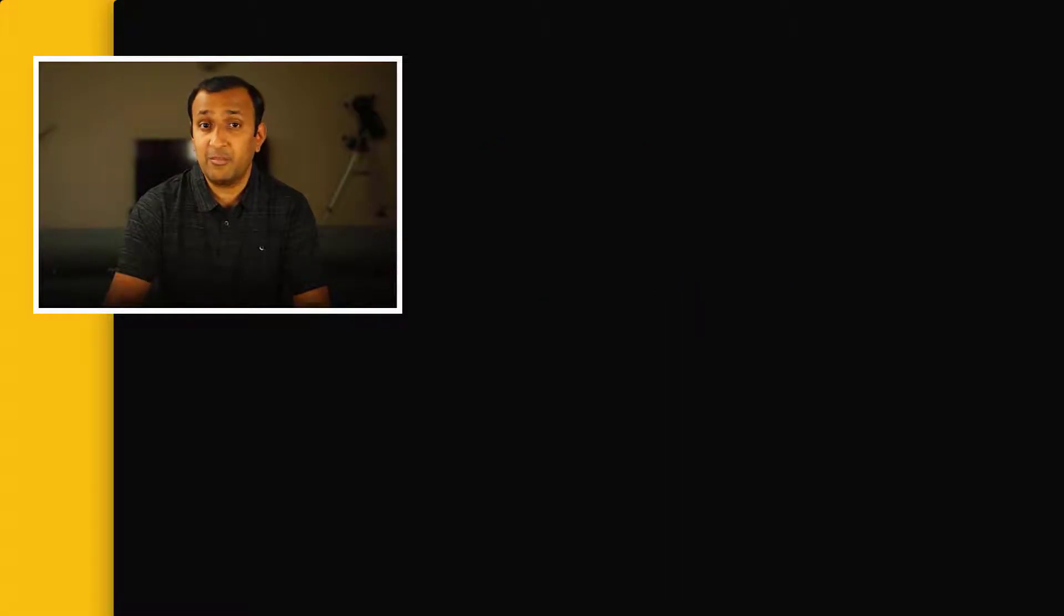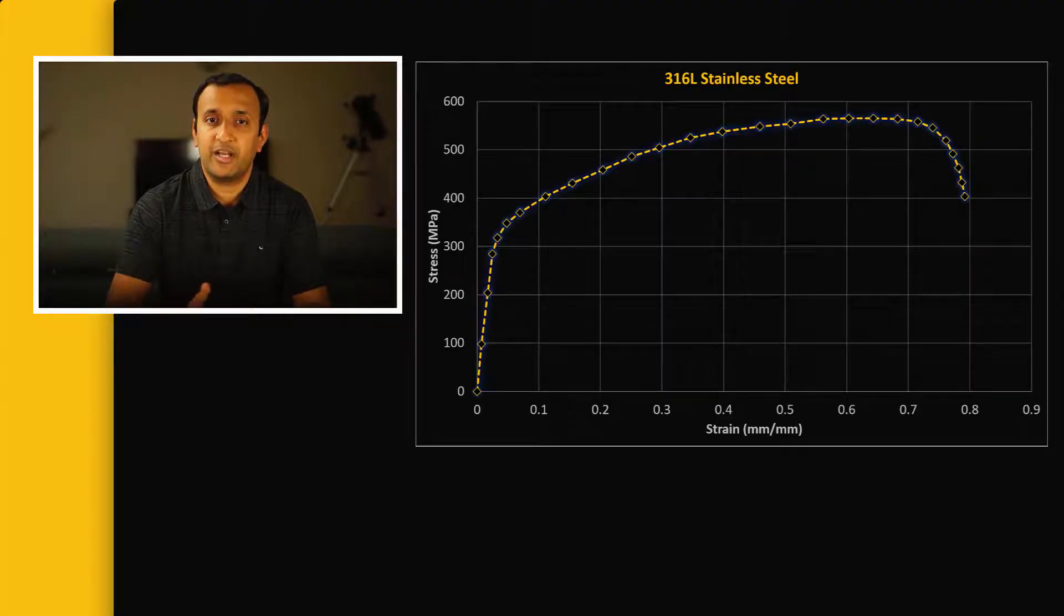Next, we must identify the point at which the material begins to yield. An easy way of doing this is to identify the point at which the response starts deviating from linear behavior. This can be done either visually or for better accuracy, one may monitor the change in slope of the curve and then identify the point at which the curve starts to deviate from linear behavior. This point is the yield point.